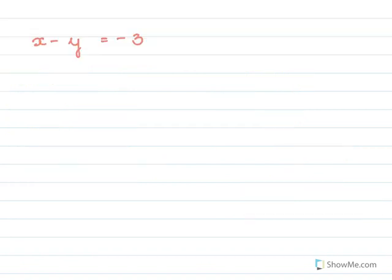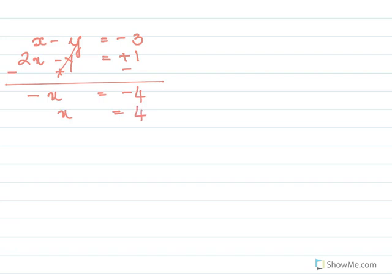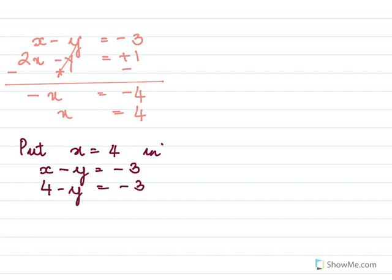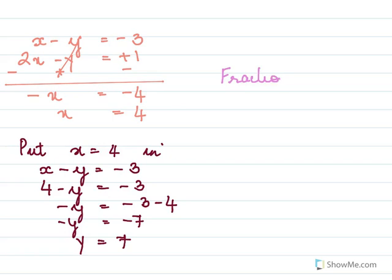Taking both equations and subtracting: equation 1 is x minus y equal to minus 3, equation 2 is 2x minus y equal to 1. Changing sign of equation 1 for subtraction, the y terms cancel, giving minus x equal to minus 4, so x equal to 4. Substituting into equation 1: 4 minus y equal to minus 3, so y equal to 7. The fraction is 4 over 7.